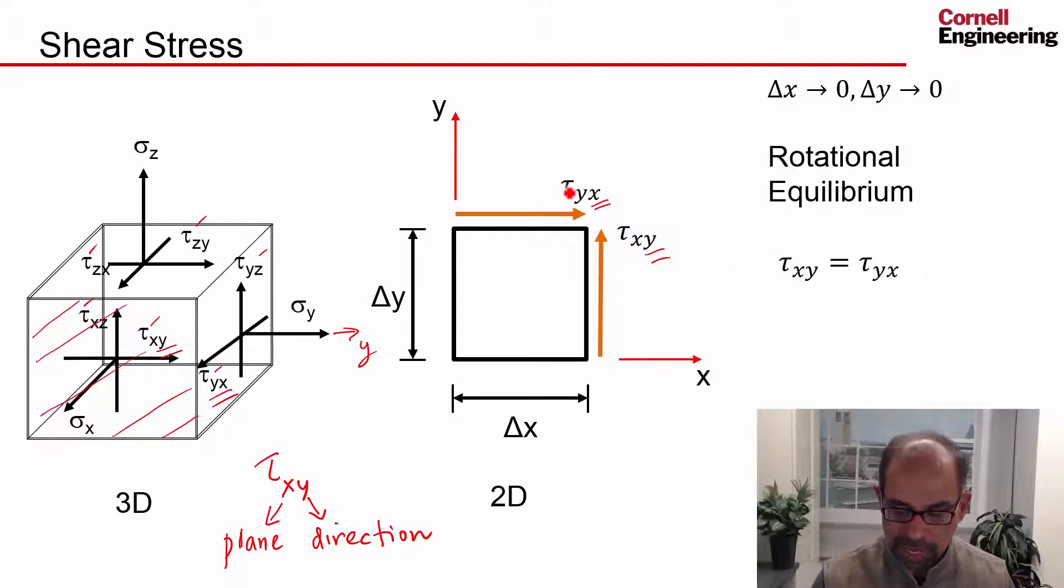To get a feel for how that happens, you take rotational equilibrium about this corner. So you get a moment about here. You have to multiply the stress by the area and then by the distance to get the moment, and similarly over here.